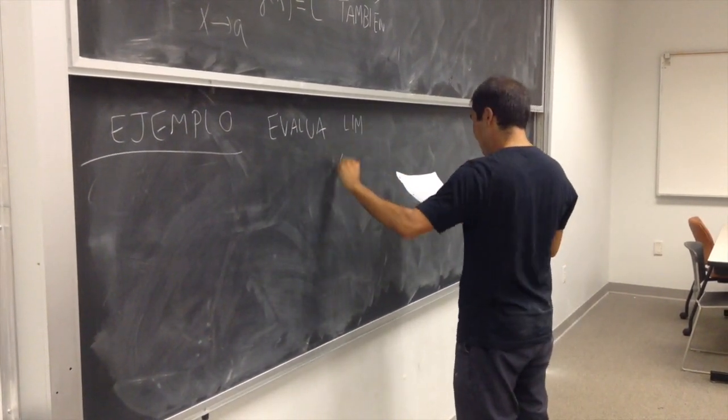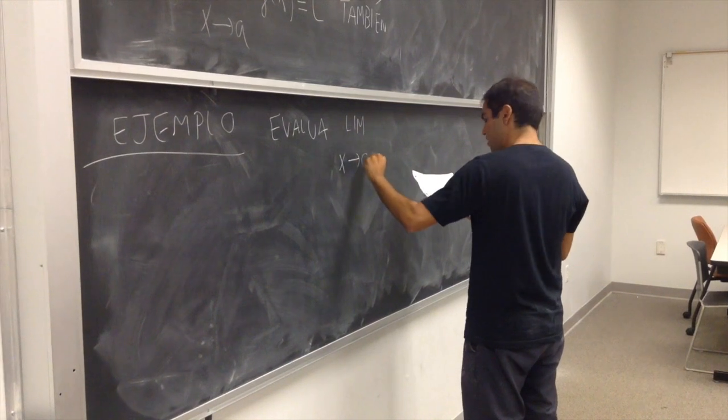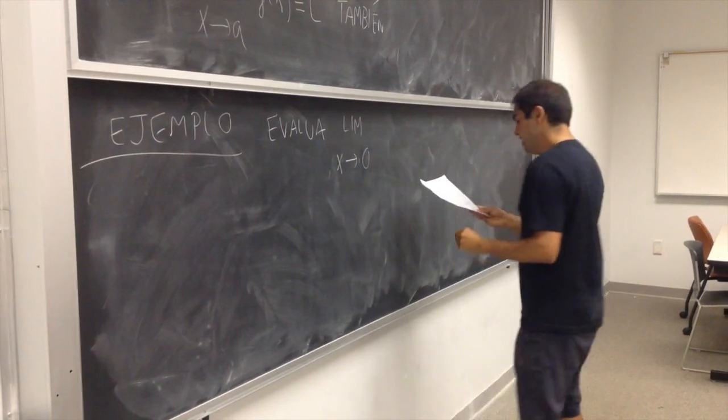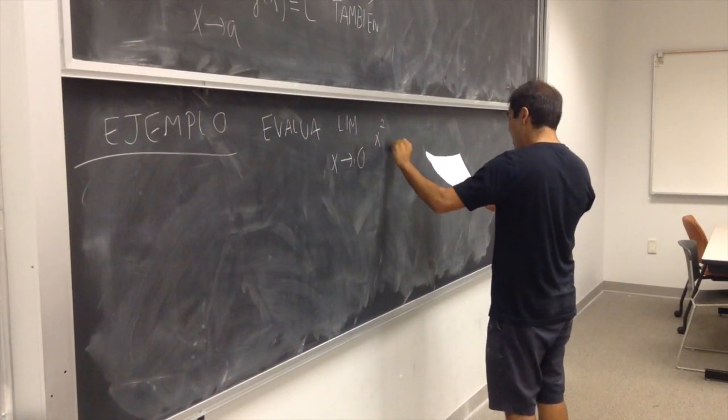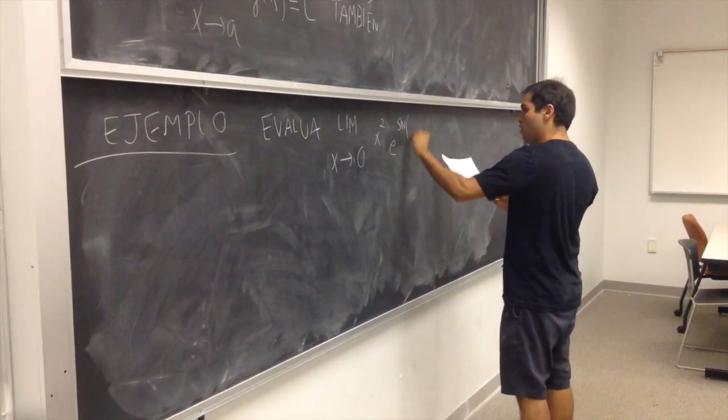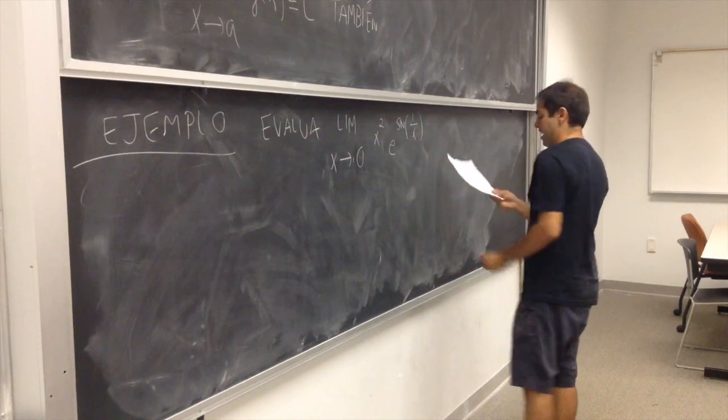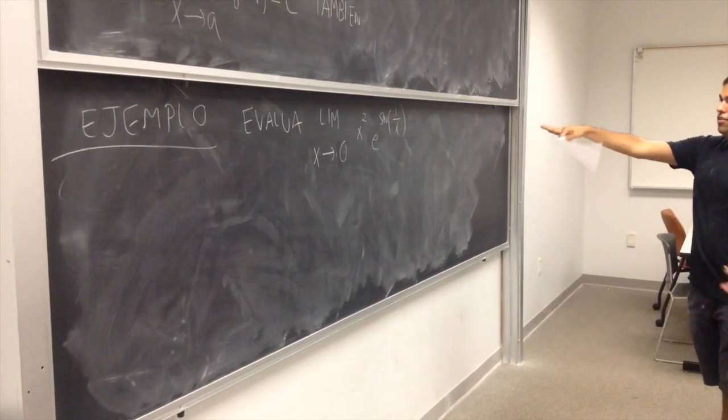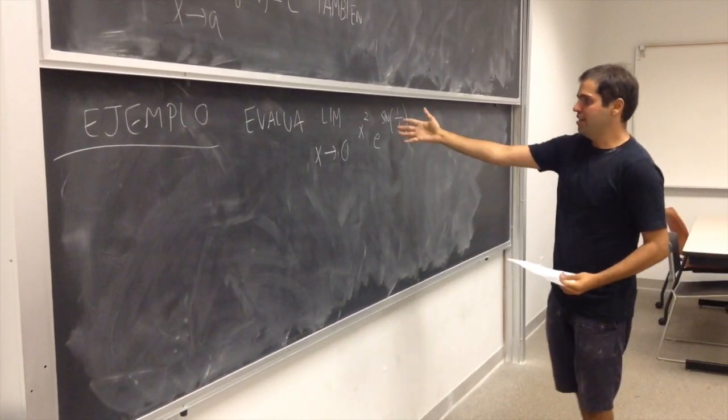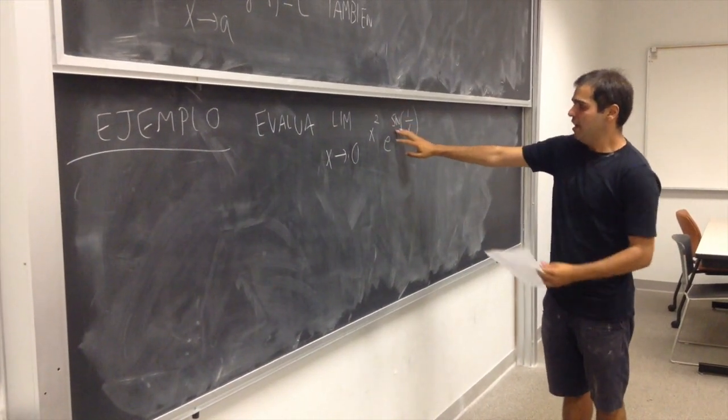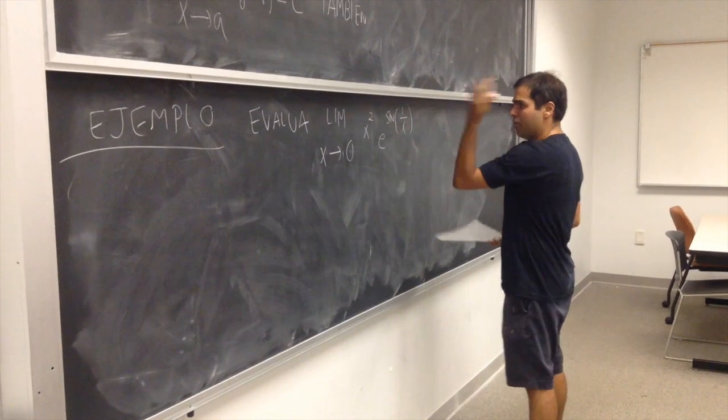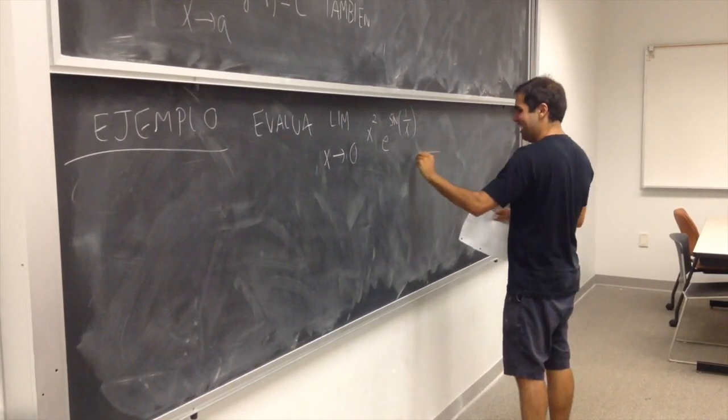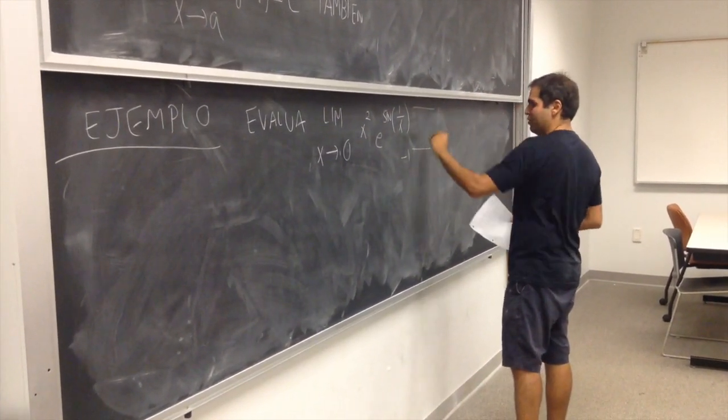el límite de x tiende a 0 de x cuadrado e a la seno de 1 por encima de x. Y sabemos, una cosa que sabemos es que